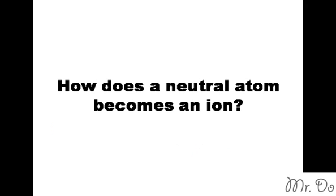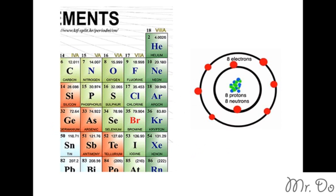A neutral atom becomes an ion when it gains or loses electrons. Let's take a look at oxygen for an example.